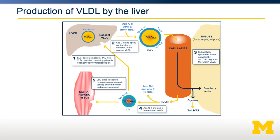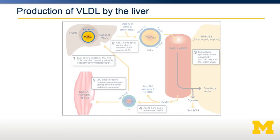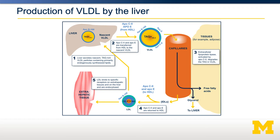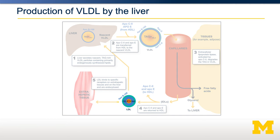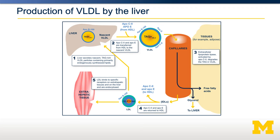VLDL particles are made in the liver, coated with ApoB100 and phospholipids — importantly, phosphatidylcholine. Once in the circulation, they acquire ApoC2, ApoC3, and ApoE. These coated VLDL particles then come in contact with peripheral tissues such as muscle or adipose. Through the enzyme lipoprotein lipase, lipids can be removed from those particles, resulting in an LDL particle. The LDL particle is then reabsorbed by the liver and its contents recycled. However, if LDL particles are not reabsorbed, they can build up in the blood, and this is causal of cardiovascular disease.